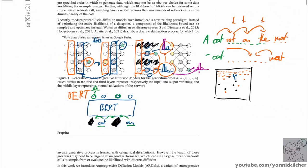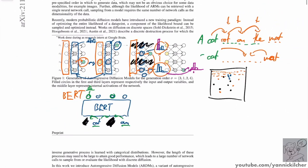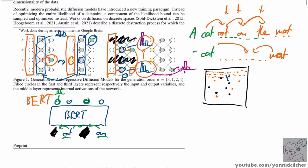The whole point is: these models train like BERT, but they decode like autoregressive models, except the order isn't fixed — the order can be any order you want.